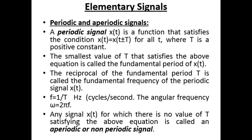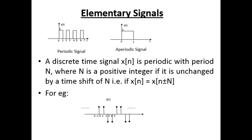Next, we have periodic and aperiodic signals. A periodic signal x(t) satisfies x(t) = x(t ± T) for all t, where T is a positive constant. The smallest value of T satisfying this equation is called the fundamental period. The reciprocal of the fundamental period T is the fundamental frequency: f = 1/T hertz. Any signal for which no such T exists is called an aperiodic or non-periodic signal.